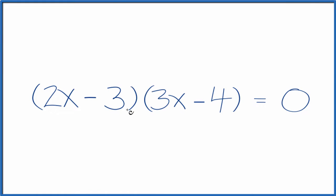If you need to expand and simplify 2x minus 3 times 3x minus 4, here's how you do it. We could use the FOIL method.